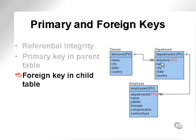The foreign key is in the child table. Primary key in the parent table: division ID, department ID, employee ID. Foreign key in the child table: division ID and department ID.